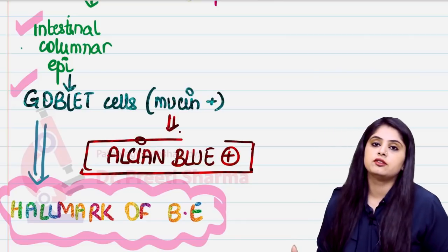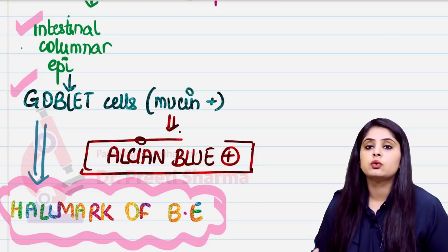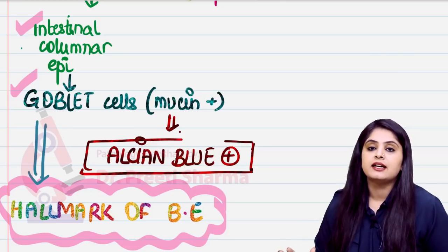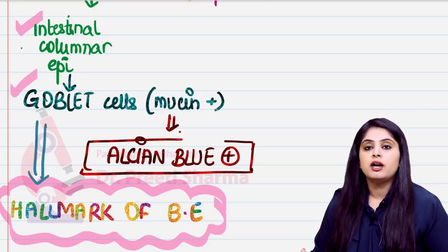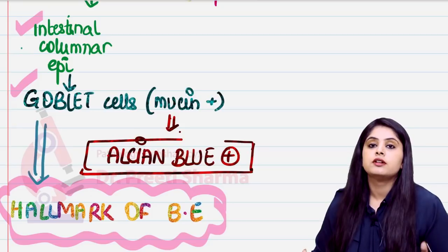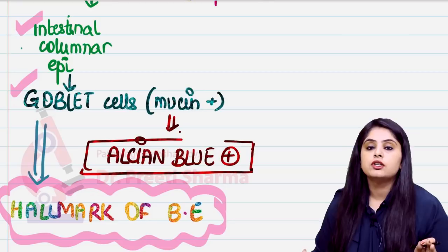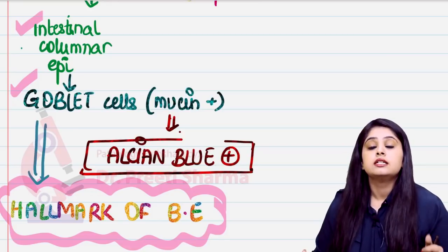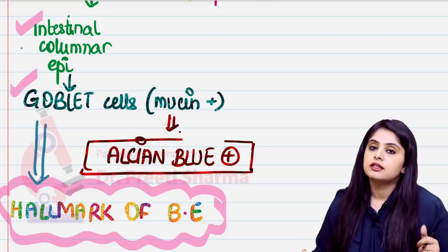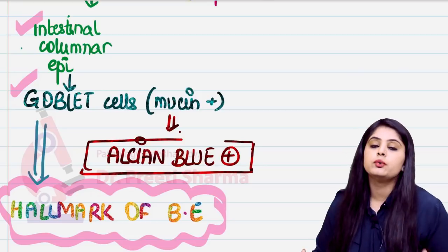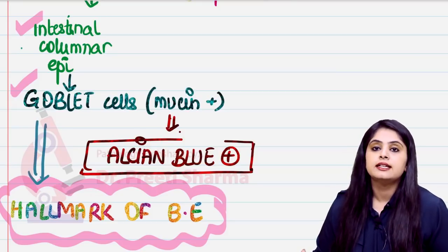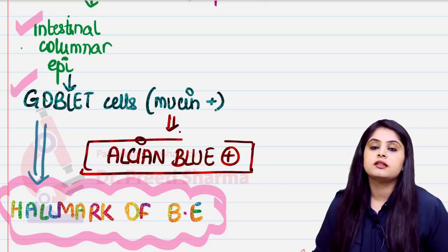Reviewing hallmarks covered so far in pathology: the hallmark of apoptosis is nuclear chromatin condensation; neuronal apoptosis — activation of apoptosis-inducing factor; acute inflammation — increased vascular permeability; chronic inflammation — tissue destruction and repair; repair — granulation tissue; malignancy — anaplasia. And now, the hallmark of Barrett's esophagus is goblet cells containing mucin, which stain positive for alcian blue.